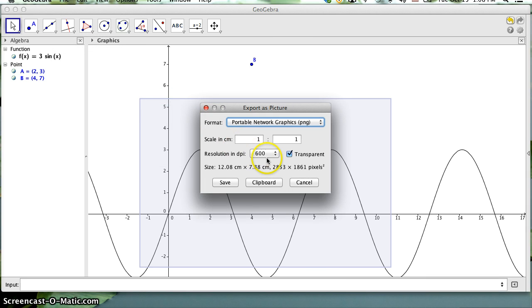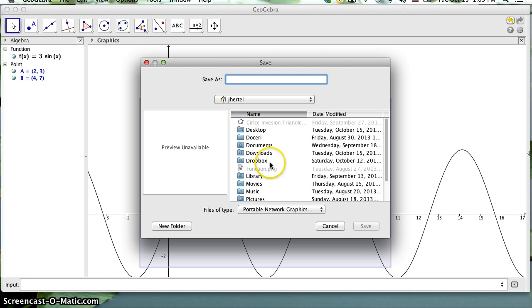And clicking on that, you're going to see that you have the option to export that. I'm going to leave it as a scale of 1 to 1, leave it as 600 dpi, that'll work fine. And then I'm going to click off transparent so that it's going to have a white background, but that shouldn't really matter. And then you just click save, and then this will allow you to save it anywhere you want on your computer.